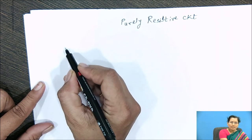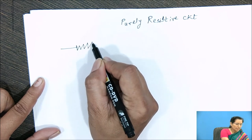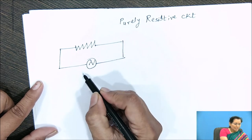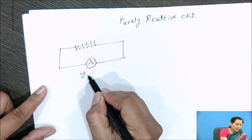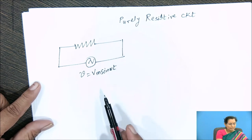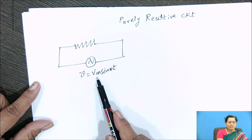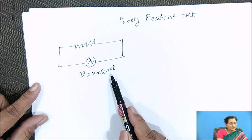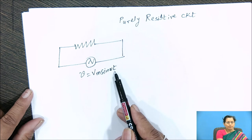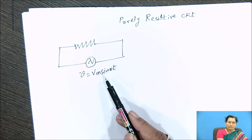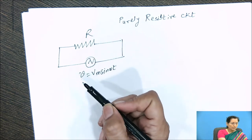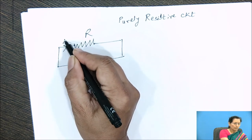Here you can see one resistance connected across an AC supply. This AC supply is given by V equal to Vm sine omega t, where V is the instantaneous voltage, Vm is the maximum voltage, omega is the angular frequency, and t is the time. This instantaneous voltage changes with respect to time. We have to discuss the relation between this voltage and the current flowing through this resistance.